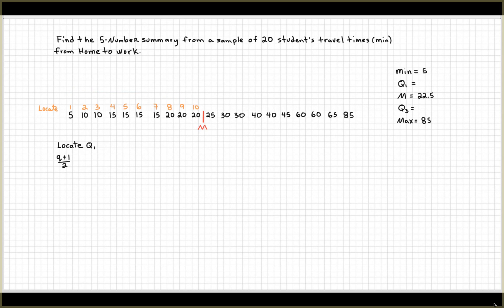It's going to be Q is 10 plus 1 divided by 2, which is going to be 11 over 2. That's going to be 5.5 place. That's between 5 and 6.